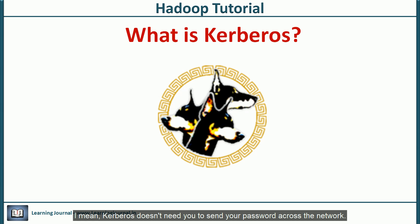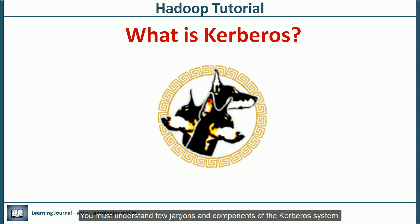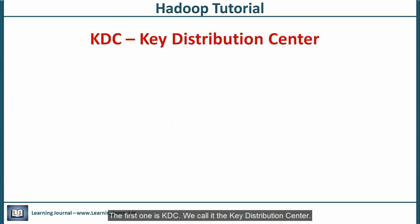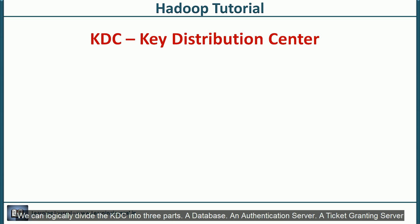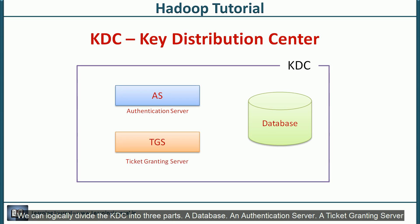Kerberos doesn't need you to send your password across the network. To understand the Kerberos protocol and how it works, you must understand a few jargons and components of the Kerberos system. The first one is KDC — the key distribution center. KDC is the authentication server in a Kerberos environment. In most cases, it resides on a separate physical server. We can logically divide the KDC into three parts: a database, an authentication server, and a ticket granting server.